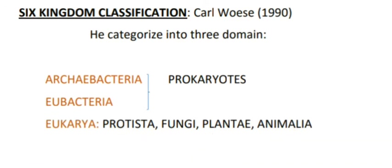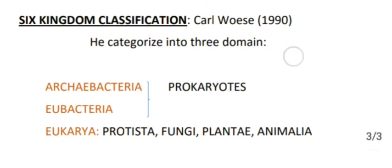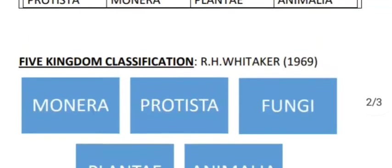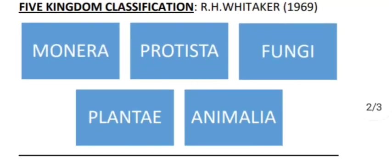So this is basically the classification system which various scientists have attempted. The most effective was the five kingdom classification given by Whittaker in 1969. We will learn more details in the next video. I hope you understood the video — if you liked it, please like and subscribe. Thank you.